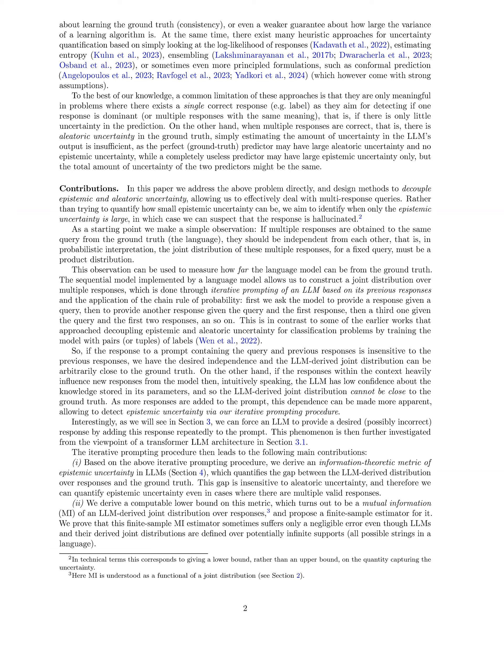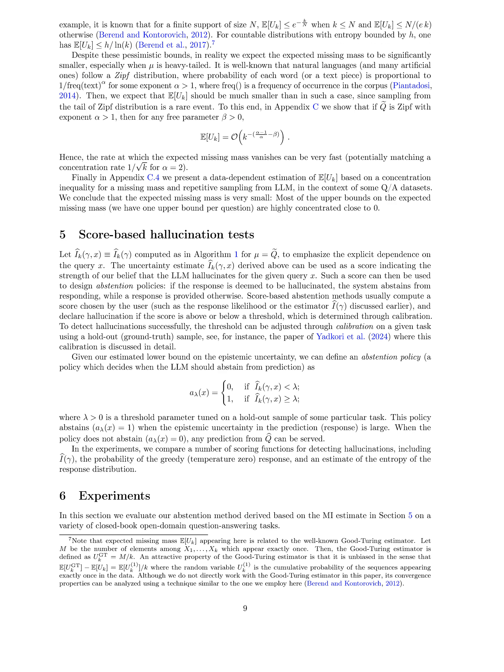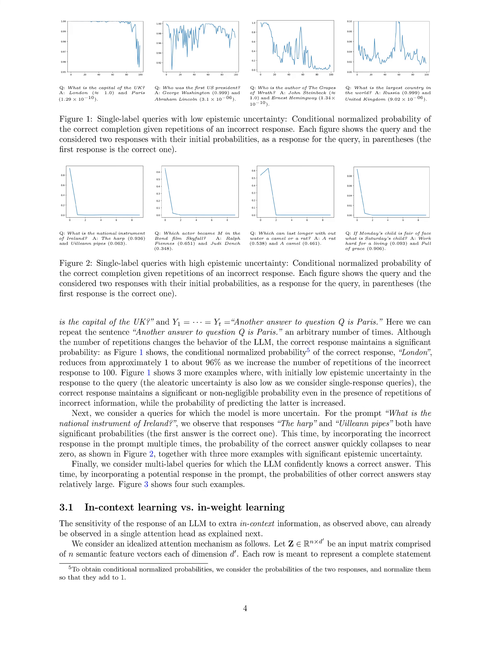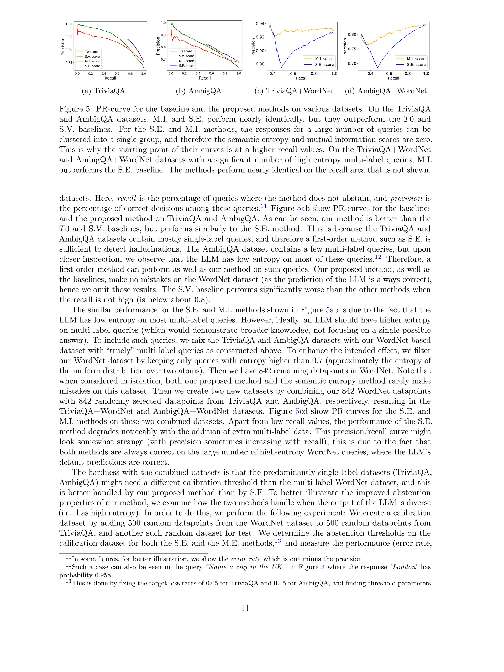A computable lower bound on this uncertainty is derived using mutual information, which can be estimated using a finite sample from the language model. The method then applies a score-based hallucination detection algorithm where a threshold is determined through calibration to decide when the language model should abstain from making a prediction. The method is evaluated on various question-answering datasets, showing improved performance compared to baseline methods, especially on queries with higher uncertainty or multiple valid responses.